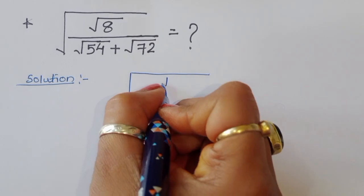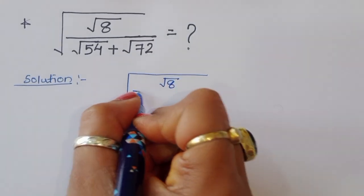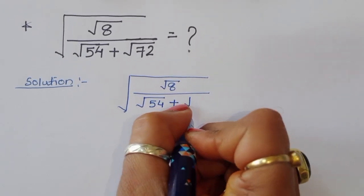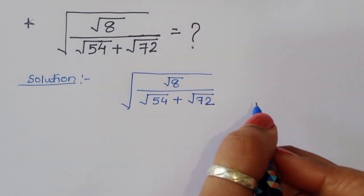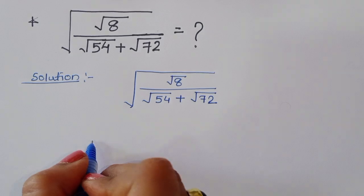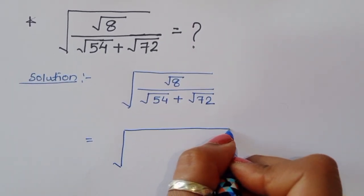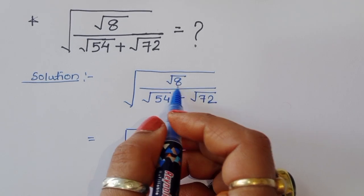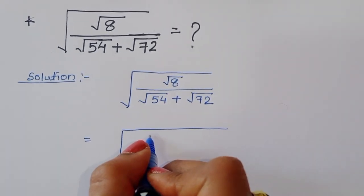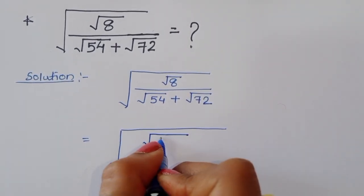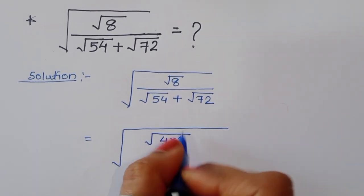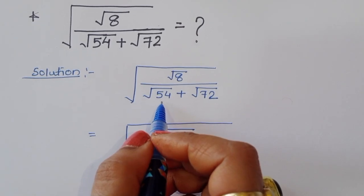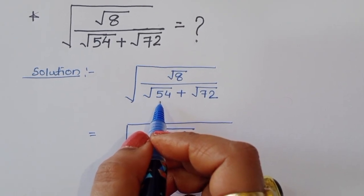The question is square root of 8 divided by square root of 54 plus square root of 72. We start with square root of 8 — factoring 8 gives us 4 times 2, so square root of 4 times 2, divided by square root of 54.